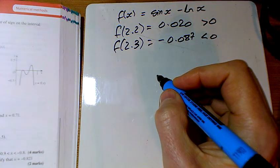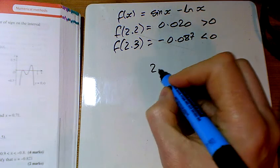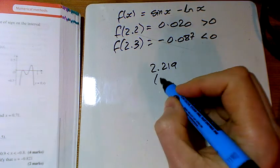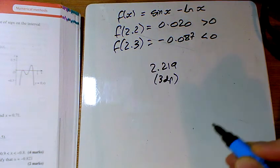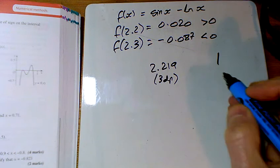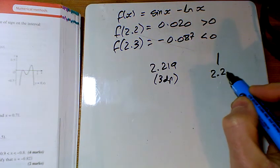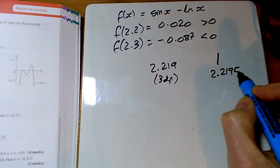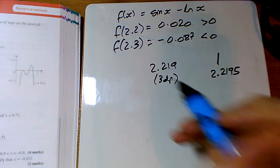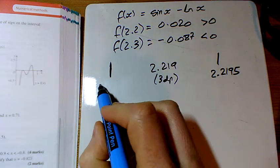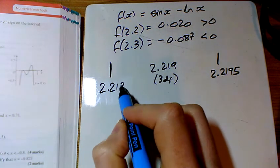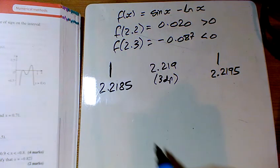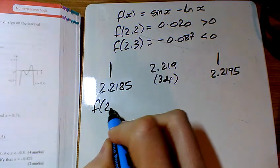And for part b, we've got 2.219 to 3 decimal places. So the upper edge of that is 2.2195. Just stick a 5 on it. And the lower edge of this is 2.2185. So we'll find out what f of both of those are.